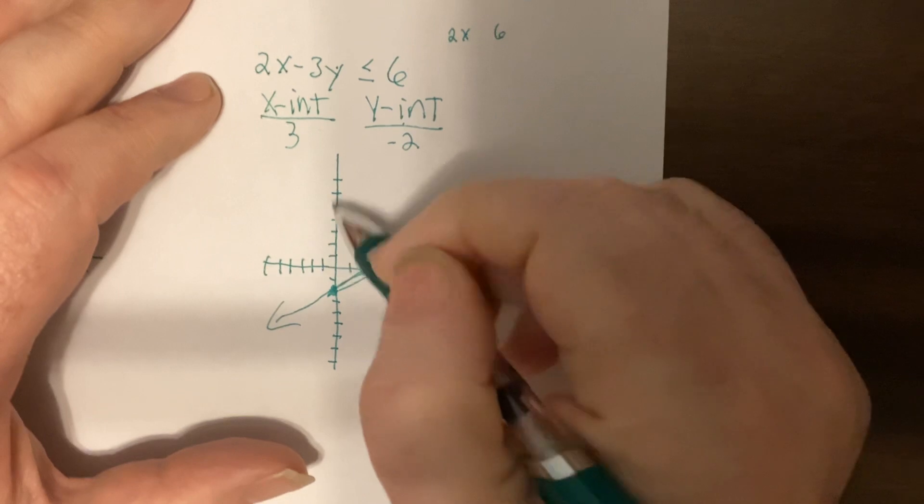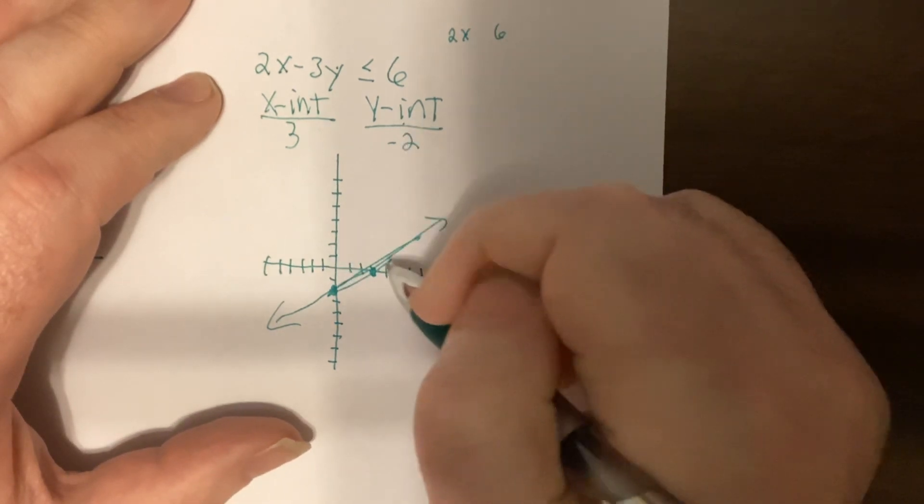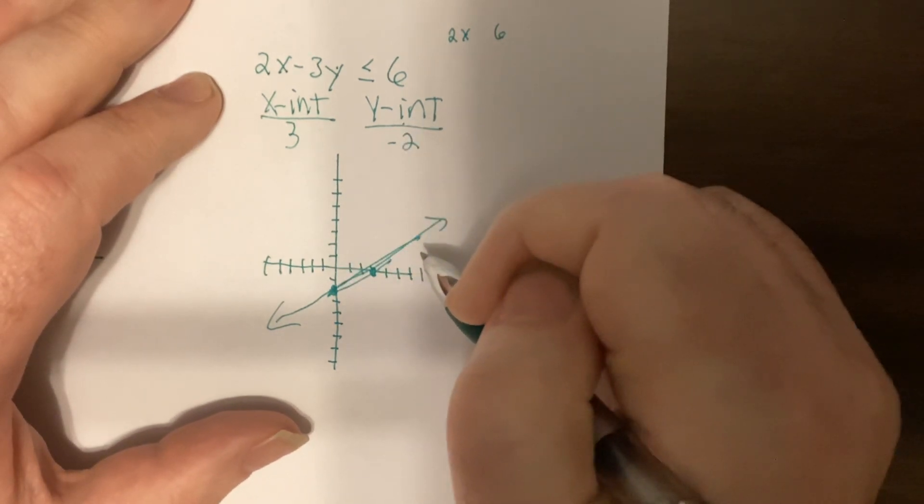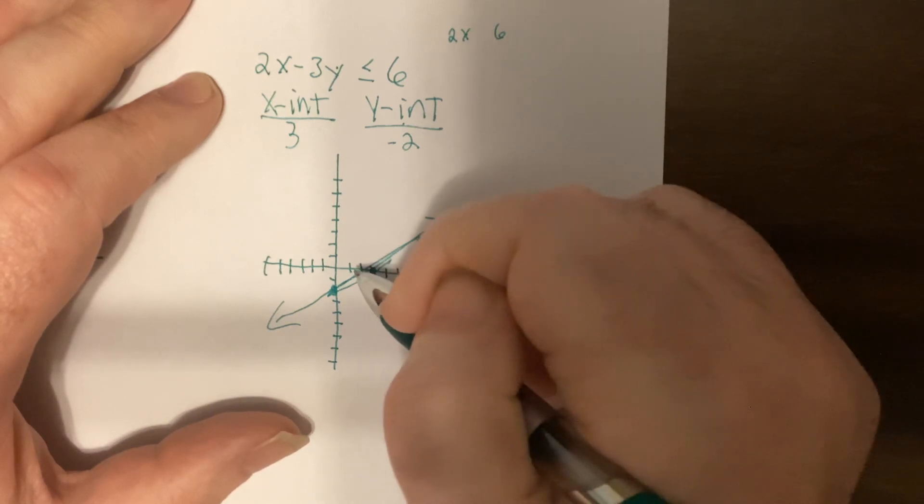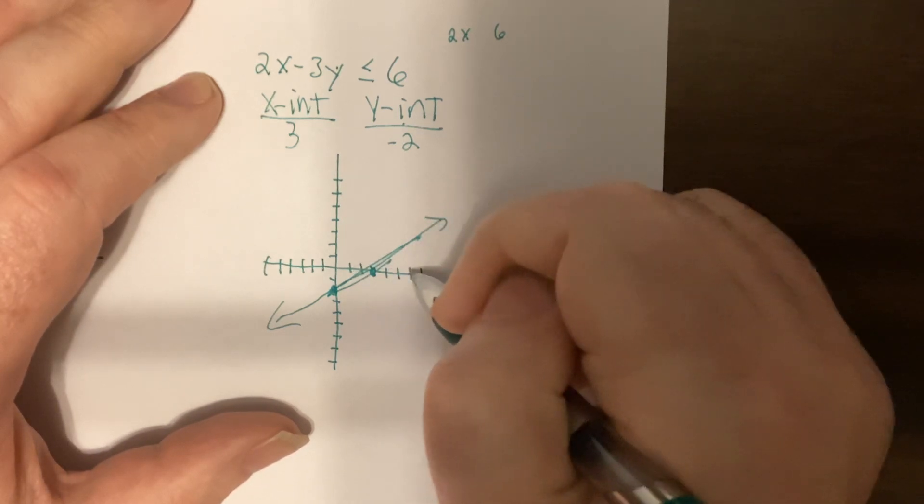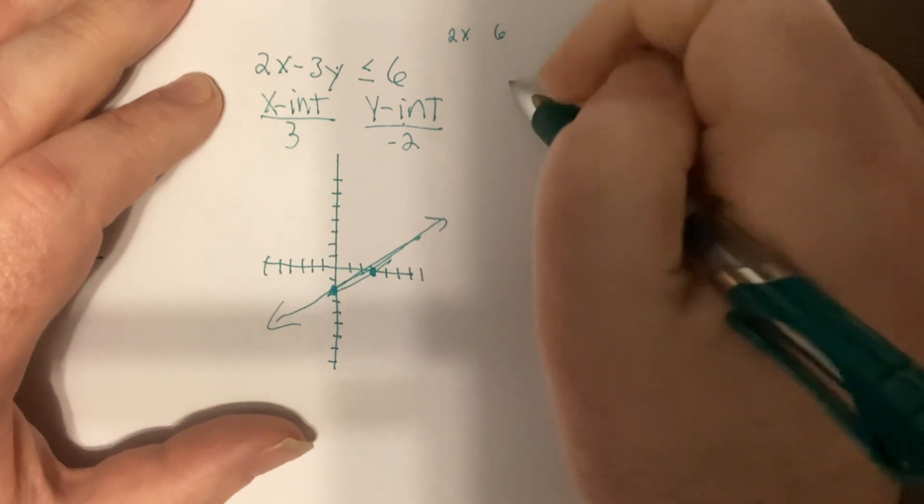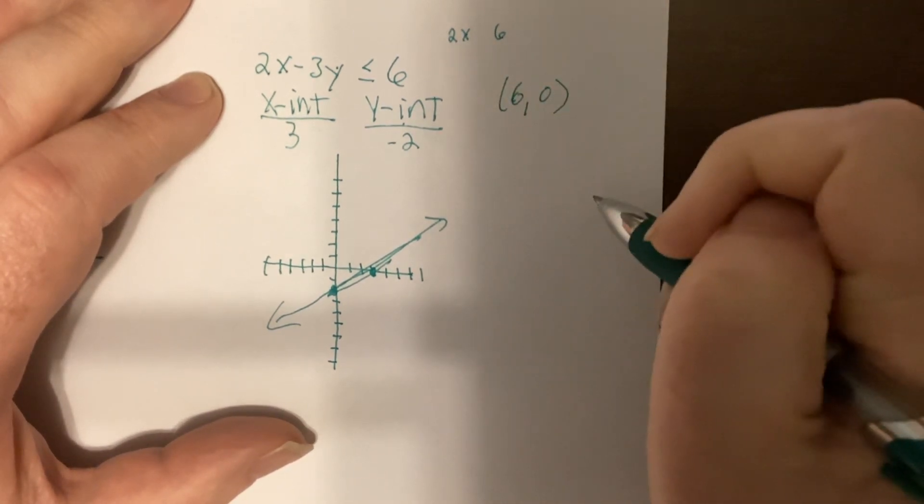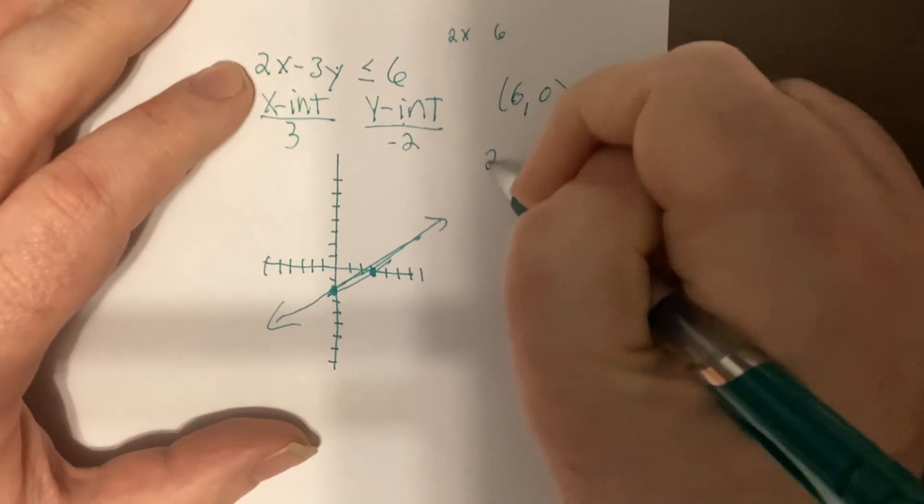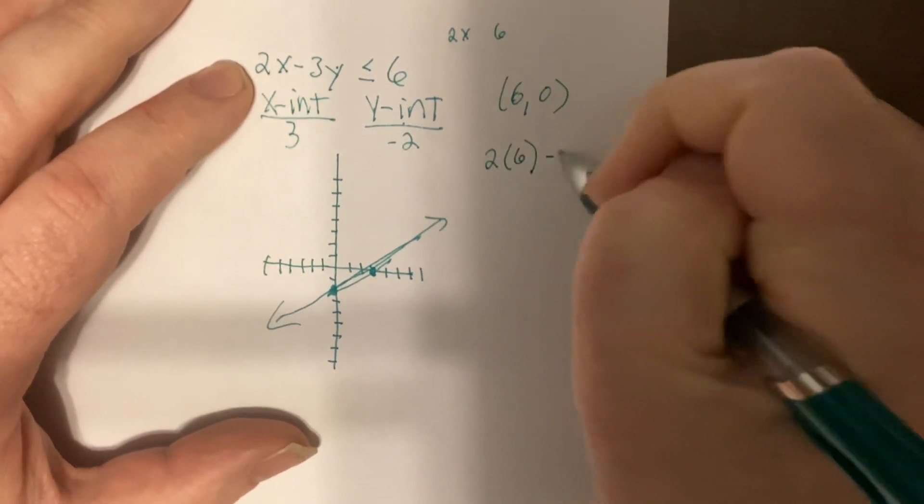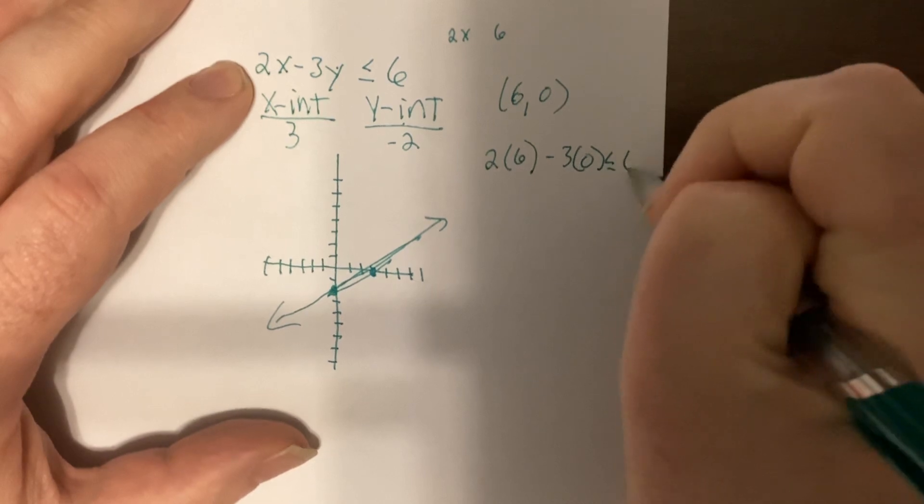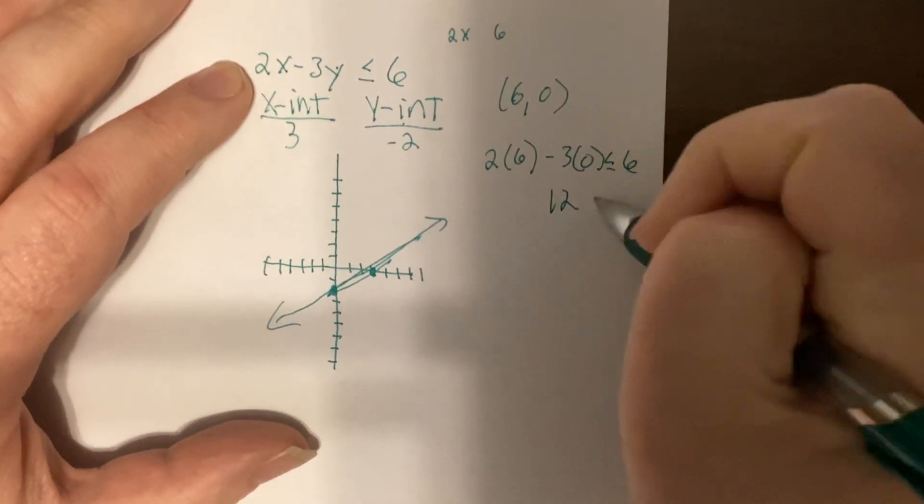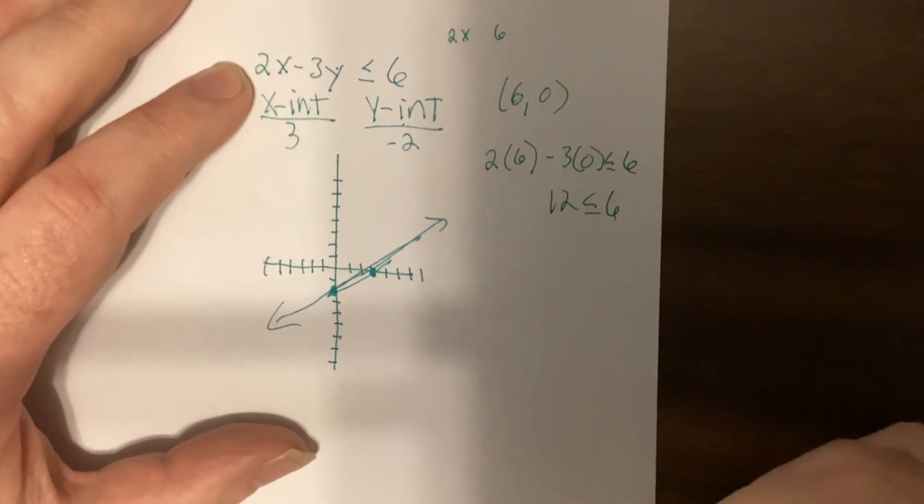Now again, we have to find which side to shade. So I'm going to pick the point, let's do six, zero. So I'd have two times six minus three times zero. Is that less than or equal to six? Is 12 less than or equal to six? No.